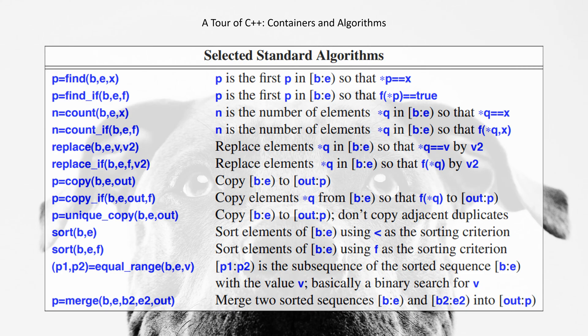p1, p2 = equal_range(b,e,v) - p1, p2 is the subsequence of the sorted sequence [b,e) with the value v; basically a binary search for v. p=merge(b,e,b2,e2,out) - merge two sorted sequences [b,e) and [b2,e2) into out.